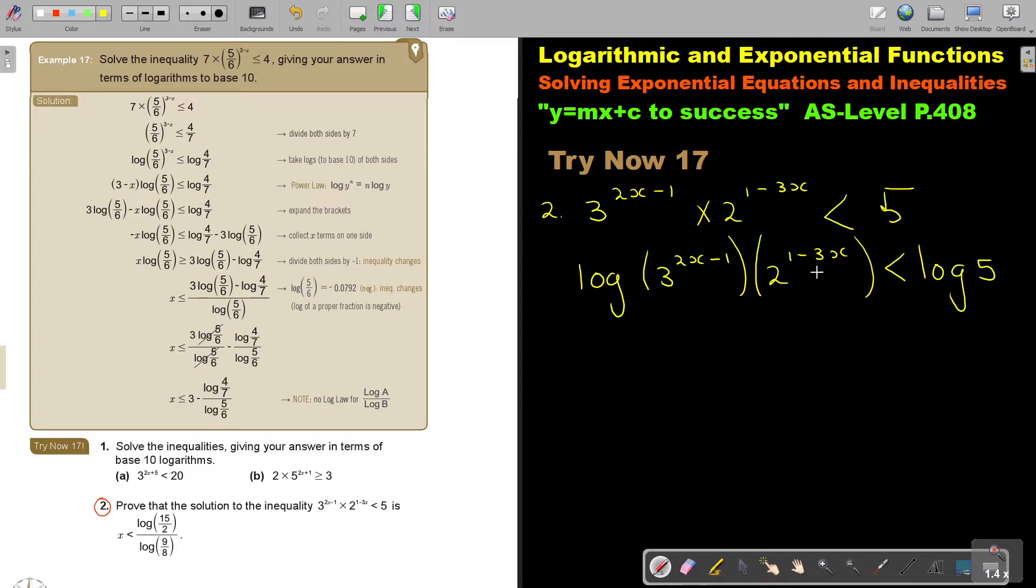Now what's the rule if it's multiplied? I make it 2 log words, and I write an addition in between. It's the product rule. Now I bring it down to the front. So it's (2x-1) log 3, plus (1-3x) log 2, log 5.